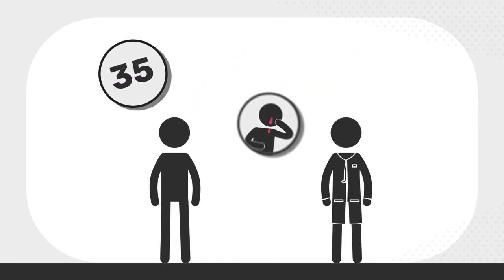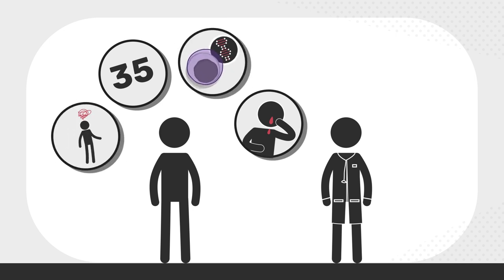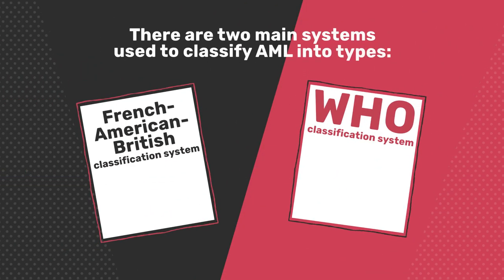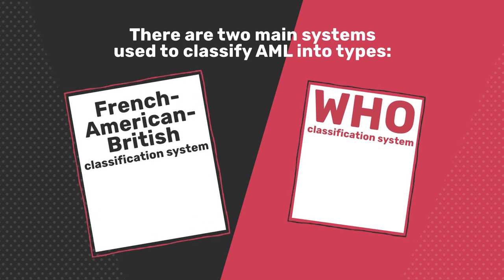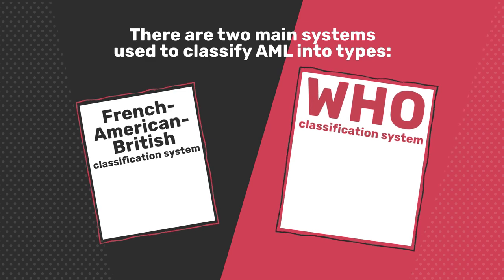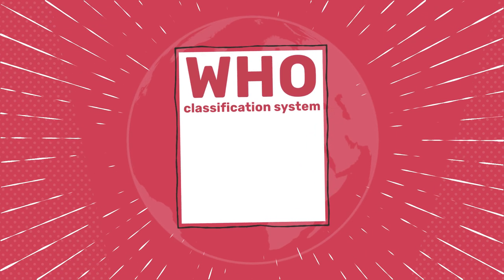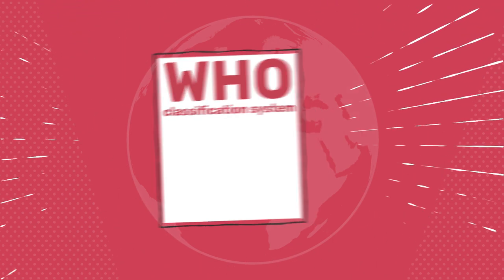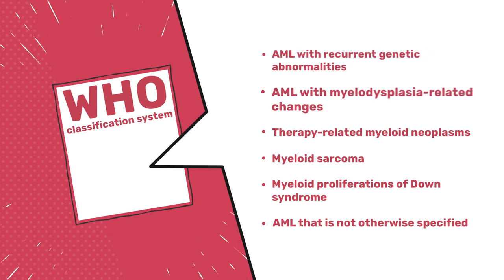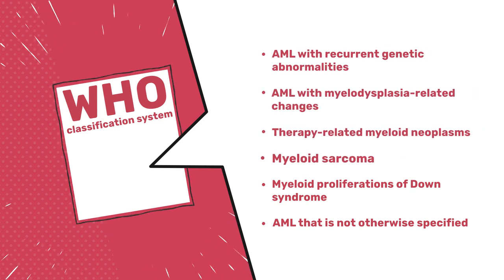Age, other existing health conditions, and information about genetic abnormalities in the leukemia cells help doctors to decide the treatment that is right for a patient with AML. There are two main systems used to classify AML into types: the French American British classification system and the more recent World Health Organization, or WHO, classification system. Here we have concentrated on the WHO classification system, which divides AML into the following different groups. We will now go through these one by one in more detail.